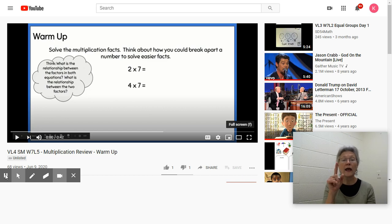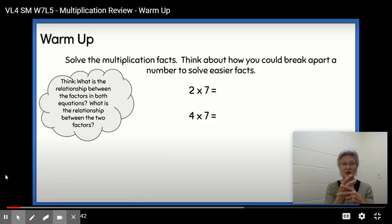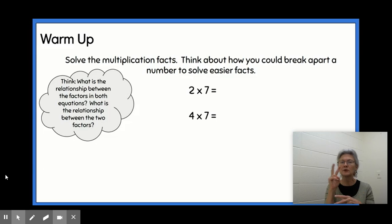So looking at these multiplication facts, I'm thinking about two times seven. I know that two times seven is really seven plus seven or double seven. So I know that that is 14.